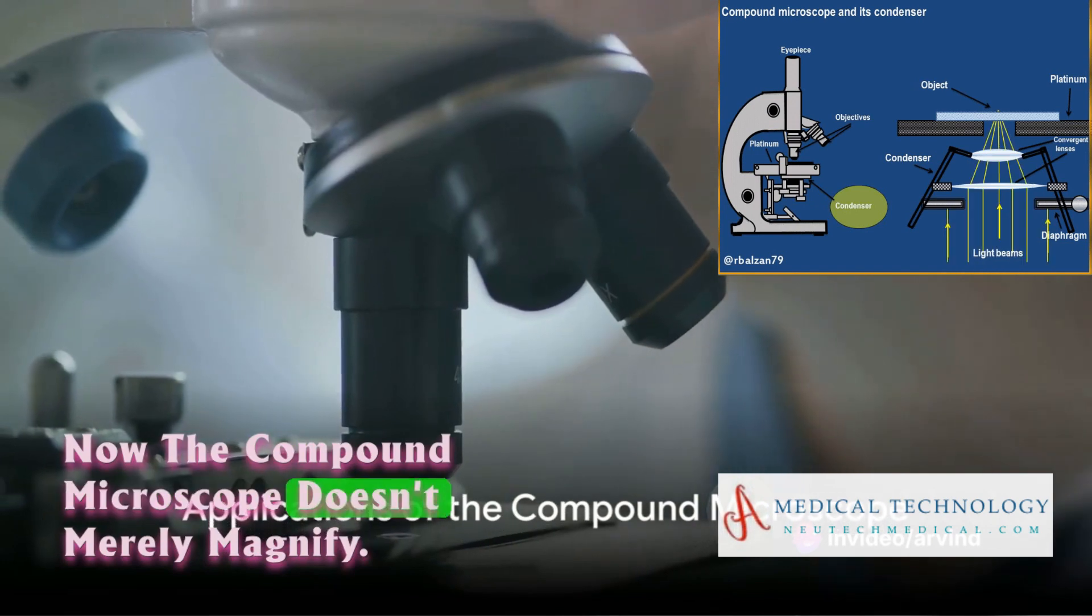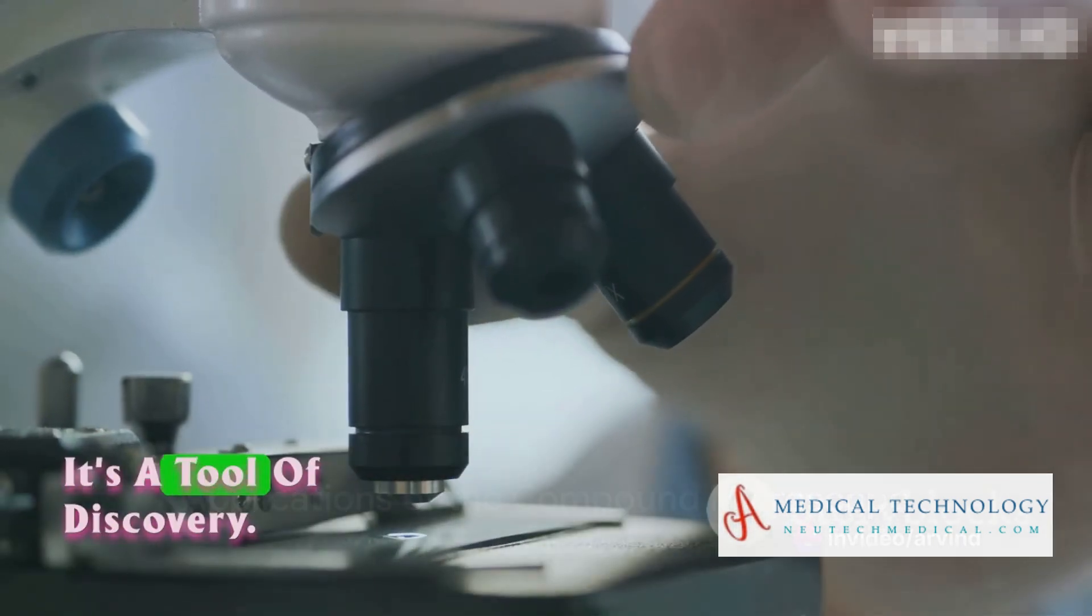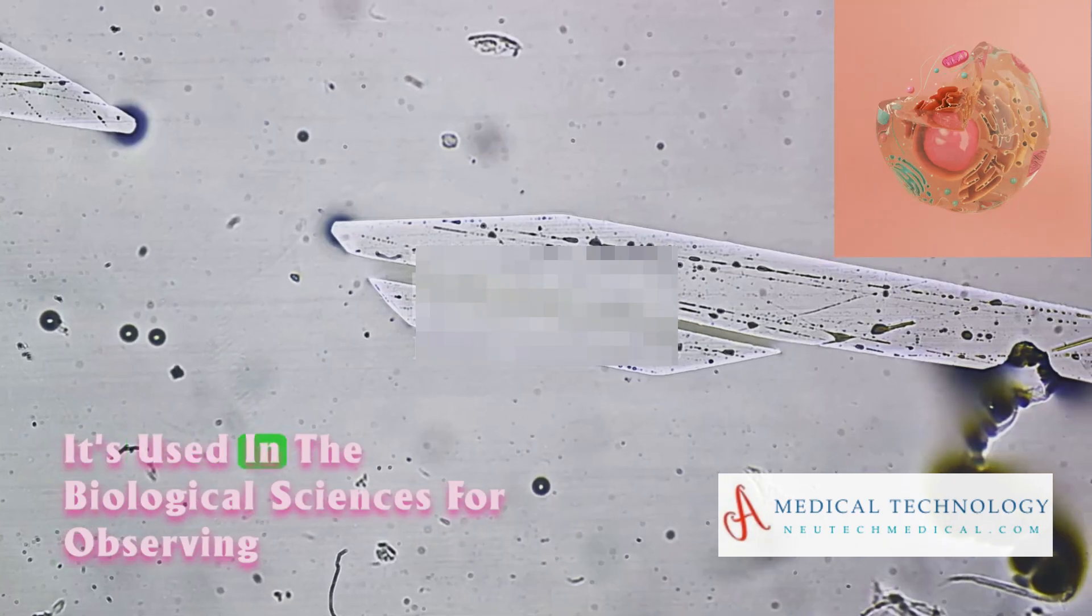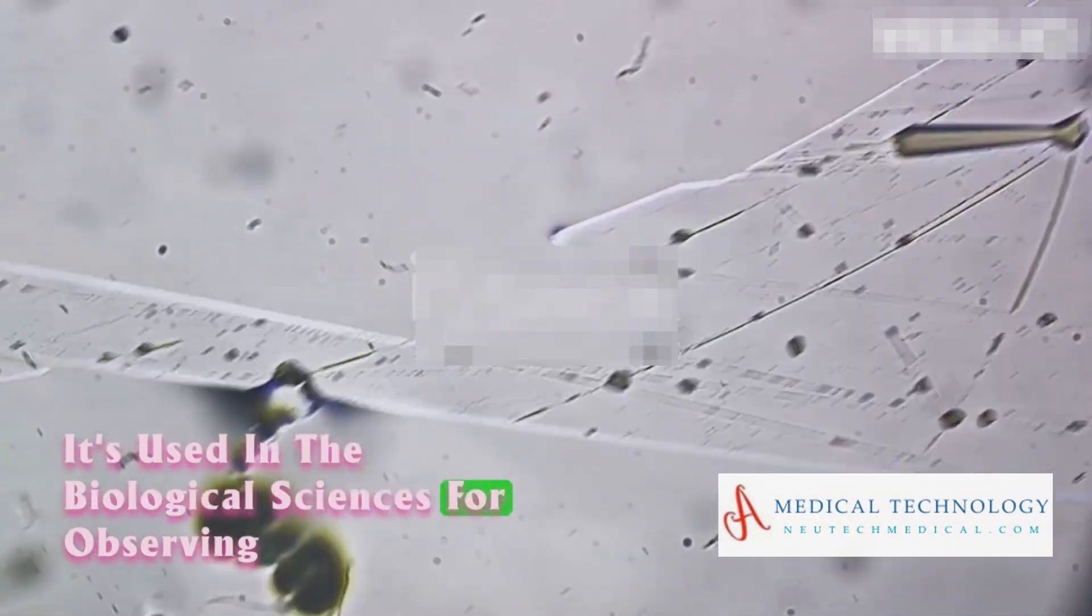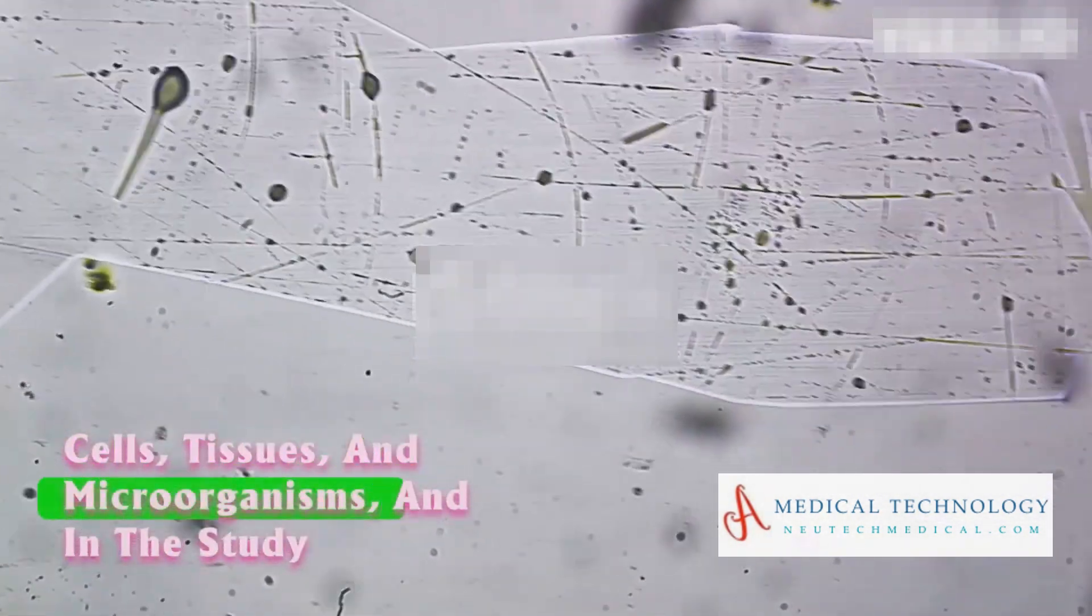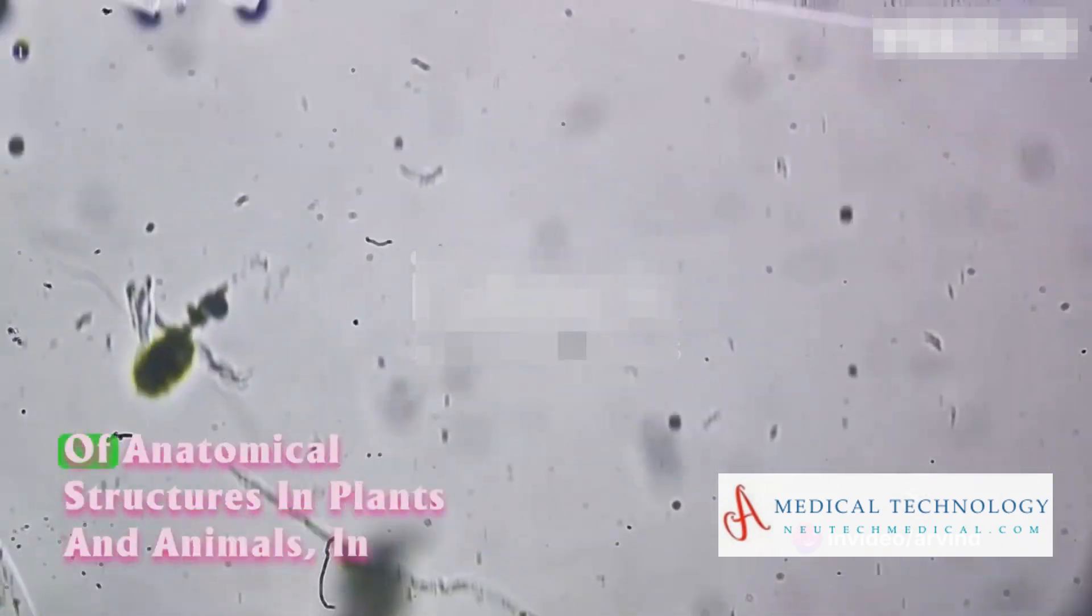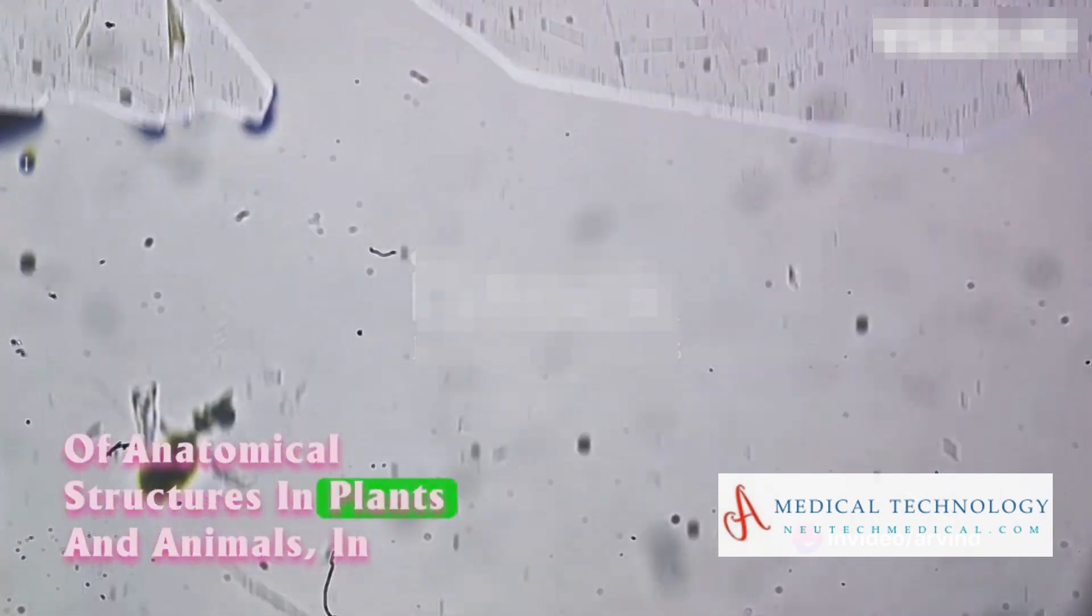Now, the compound microscope doesn't merely magnify, it's a tool of discovery. It's used in the biological sciences for observing cells, tissues, and microorganisms, and in the study of anatomical structures in plants and animals.